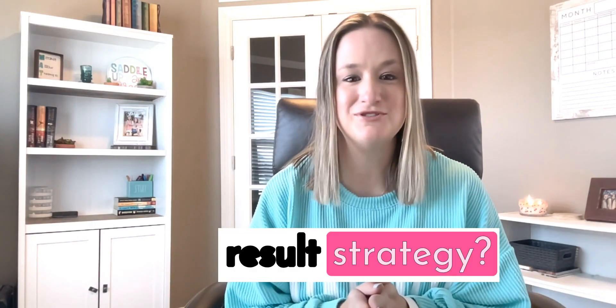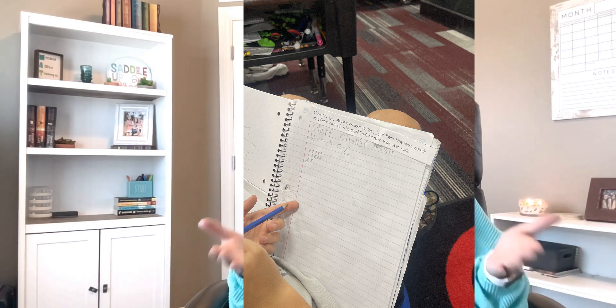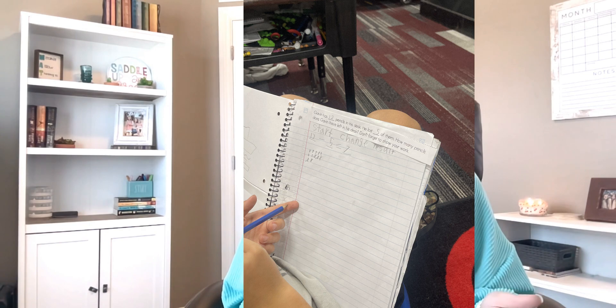What is the start, change, result strategy? It's a simple visual way to help students break down word problems and figure out what information they have and what they still need to find out. The idea is to identify three parts of a story problem. The first part is the start, how many you had to begin with. Then we have the change. The change is what happened to that amount. Did you add something or did you subtract something? And the final part of the word problem is the result, which is the ending amount. This strategy helps students focus on what the problem is actually asking, which is something our kids often struggle with.